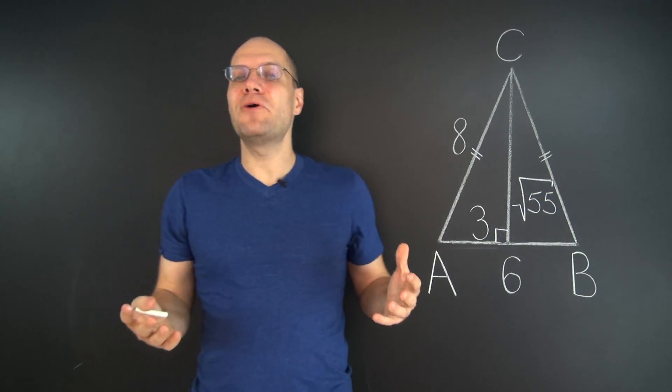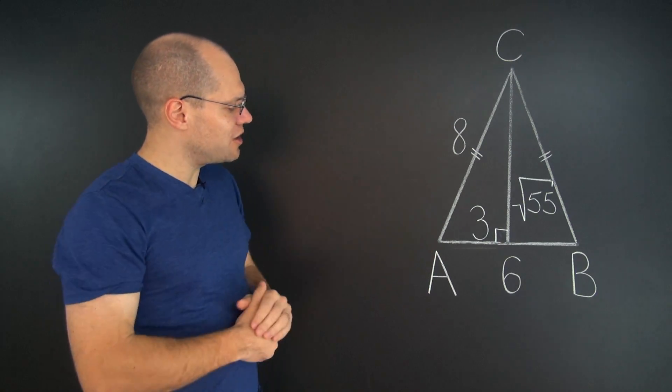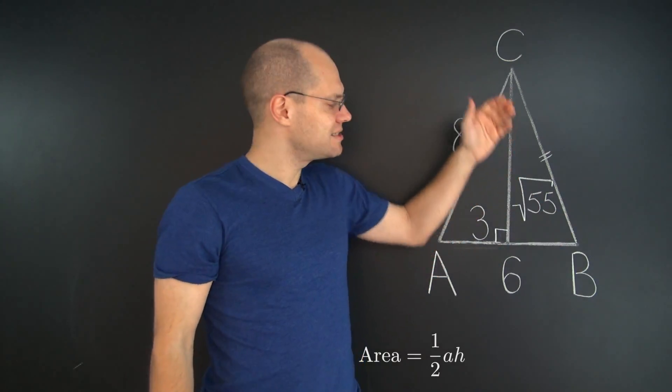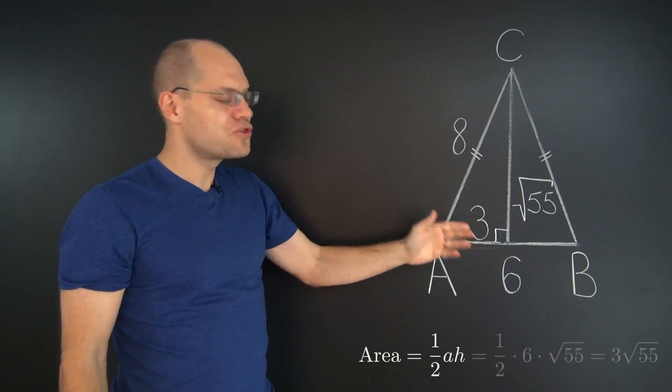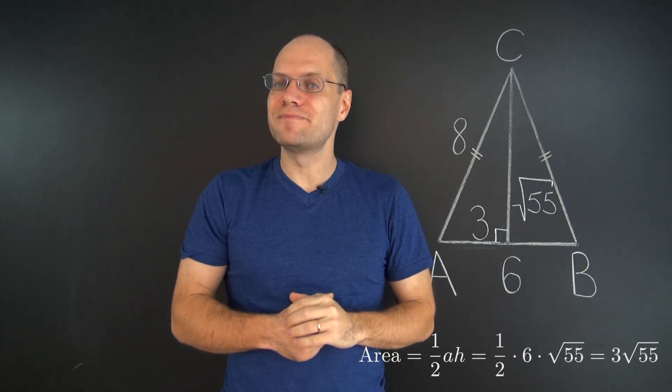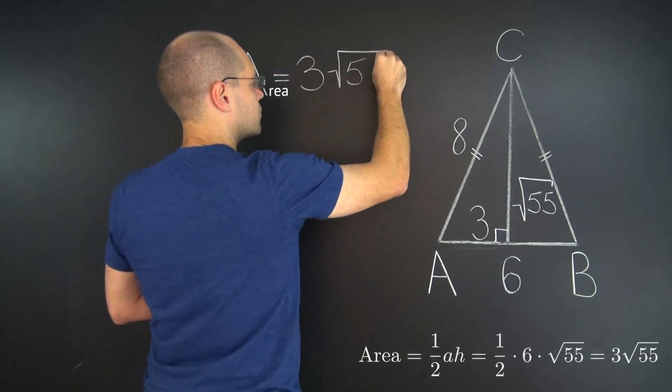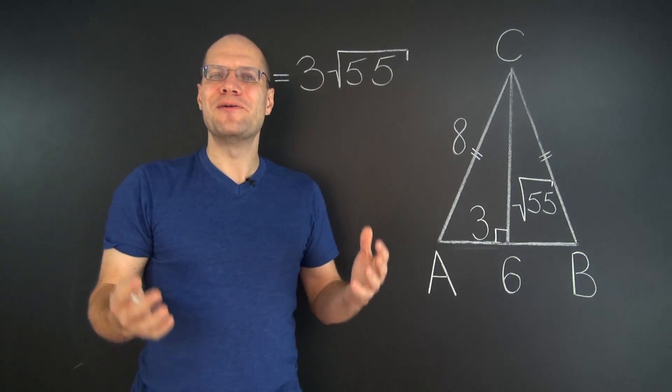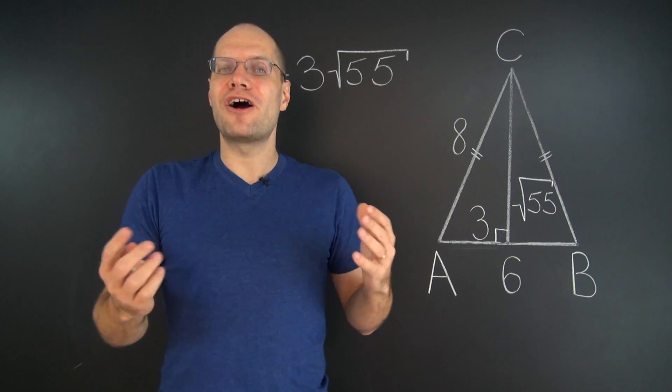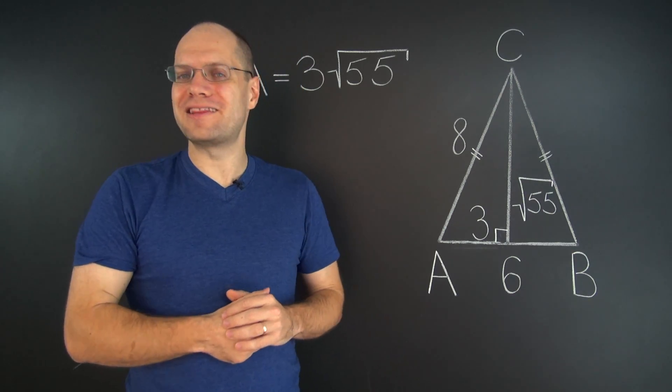And now we can evaluate the area of this triangle, because it's half the base times the height, or 3 times square root of 55. There you go! Isosceles triangles are simple and beautiful, aren't they?